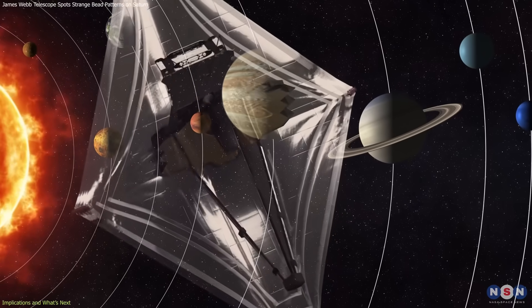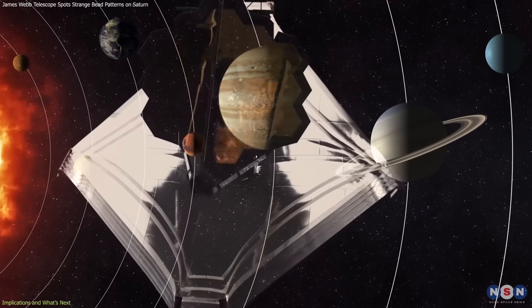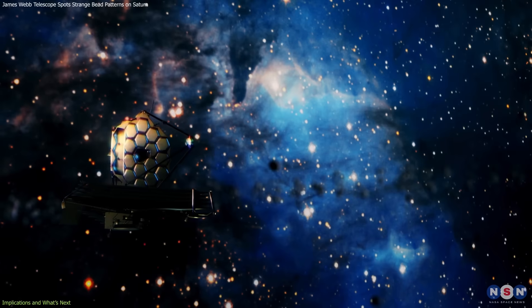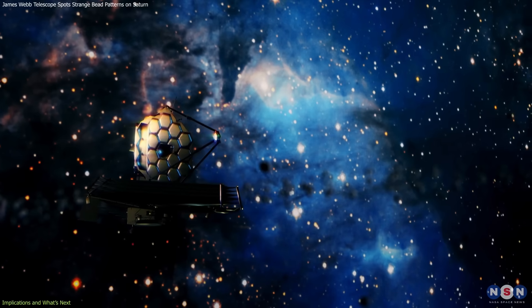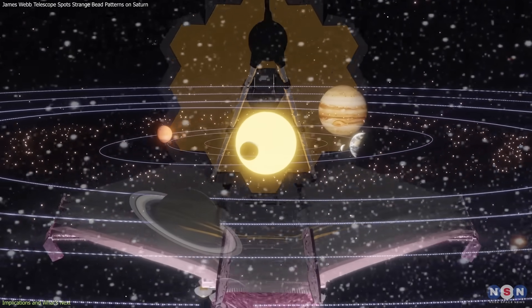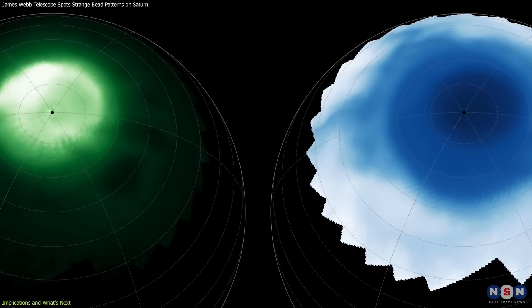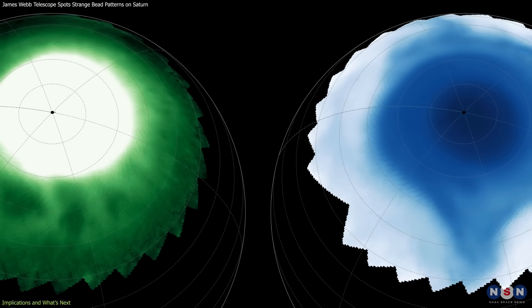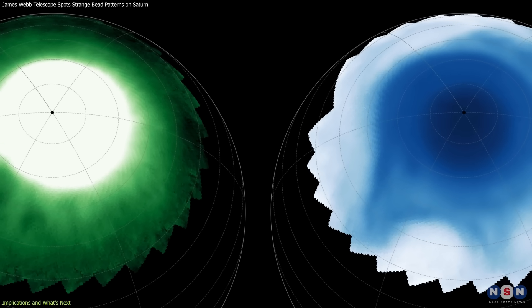This also underscores the importance of continued Webb time for planetary science. While designed primarily for deep space astronomy, it has already proven transformative for studies of our own solar system. Tracking them over the coming years will reveal whether these new features are stable, evolving, or transient.